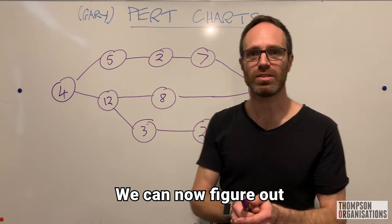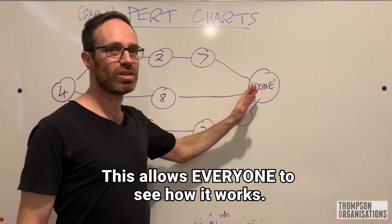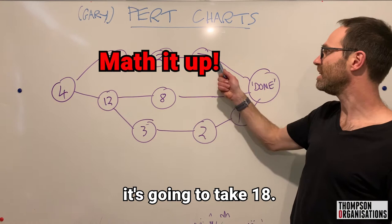Now the key to it is this. We can now figure out how long this project is going to take. Of course, your Gantt chart does this as well. This allows everyone to see how it works. How long is this project going to take? Well, if we go along the top path, it's going to take 18. Along the top path, 18.